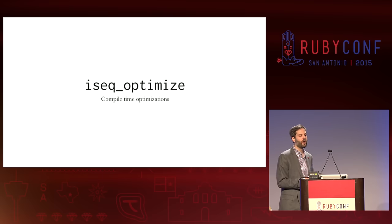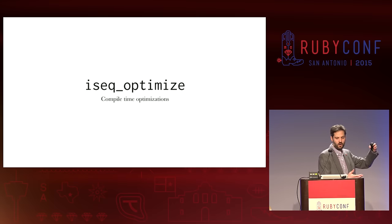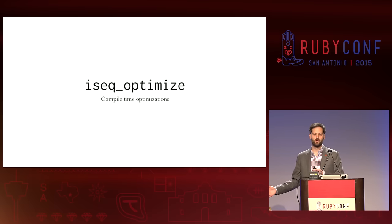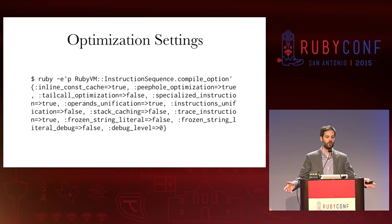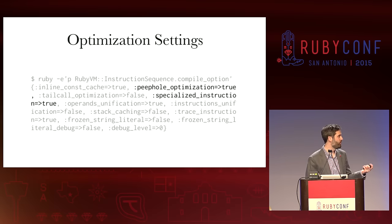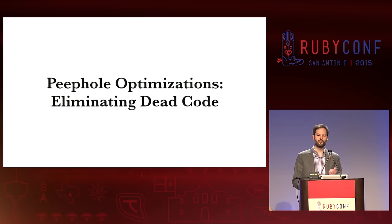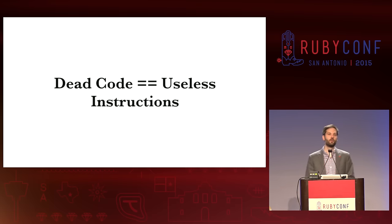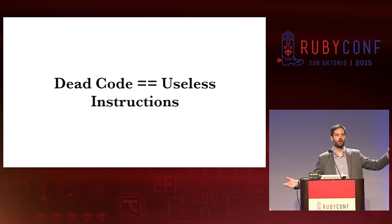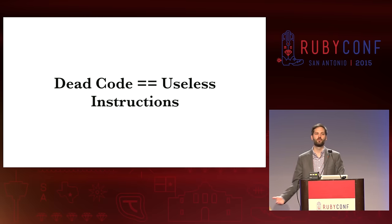If we look at that function, it calls iseq_optimized, and this is where our compile-time optimizations happen. These are different from our virtual machine optimizations. We can see what those optimizations are: if you run InstructionSequence.compile_option, you can see all of the optimizations available in Ruby's VM. We're only going to focus on two of these: peephole optimizations, and specialized instructions. Peephole optimizations are essentially eliminating dead code — not dead code like code that doesn't execute, but useless instructions.